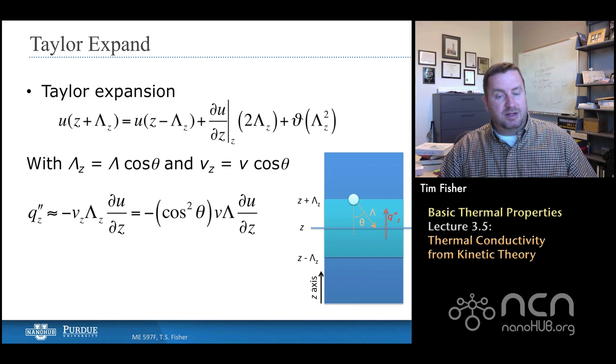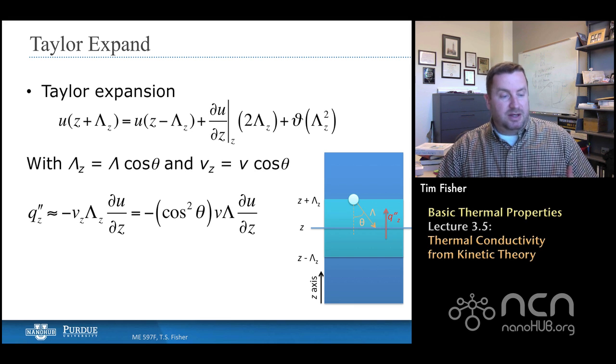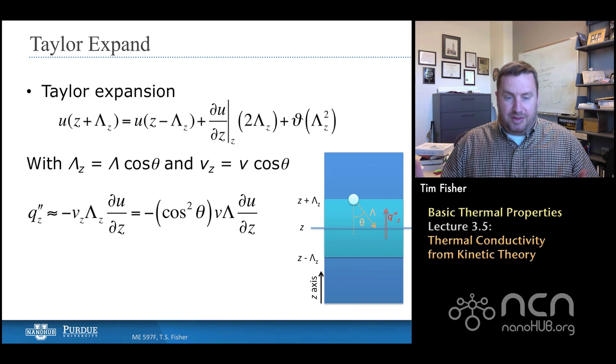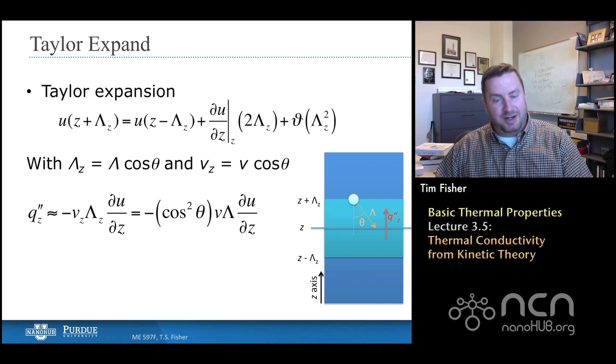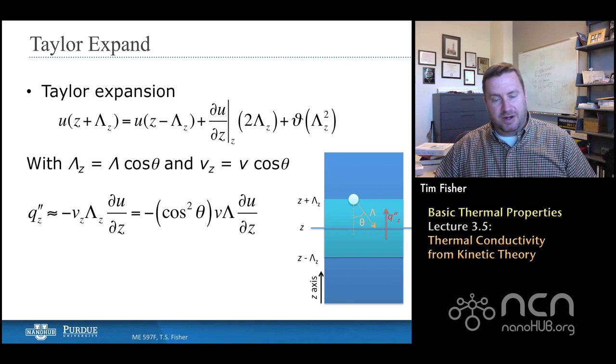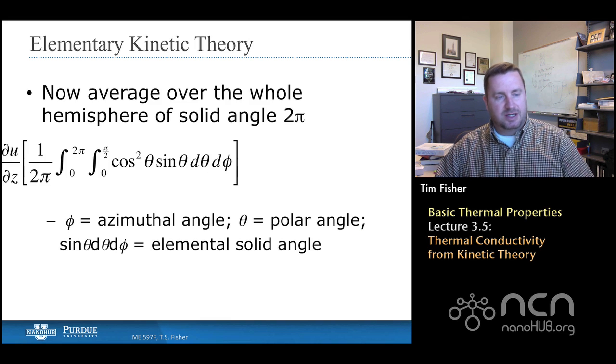Now we're going to do a little bit of geometry. We've defined this polar angle theta, and we'll say that lambda_z has to equal the actual mean free path multiplied by cosine theta of that polar angle, and same with the z component of velocity. So we go ahead and make those substitutions. We put those things back into our expression for the heat flux, and we get this final expression where I'm now relating this z component of the heat flux to the overall velocity of the carriers, the overall mean free path, and this z derivative of the energy density field. Then the prefactor of cosine squared—there could be all kinds of different thetas, and you'd be right. This is for one particular theta, and we're going to have to now average over the spatial coordinates and dimensions.